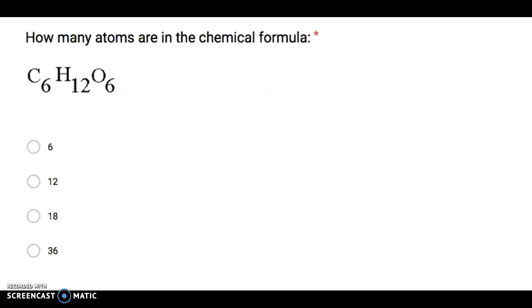How many atoms are in the chemical formula C6H12O6? 6, 12, 18, 36.